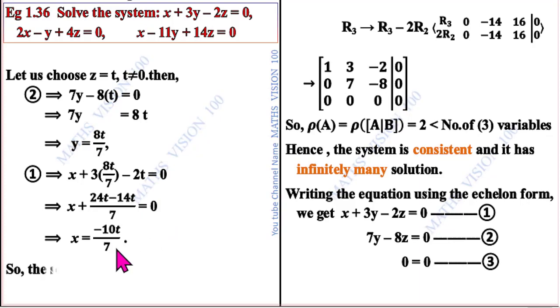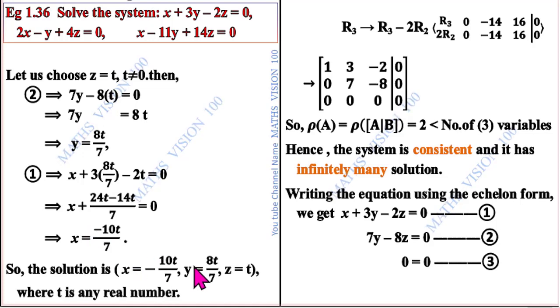So the solution is x equals minus 10t divided by 7, y equals 8t divided by 7, z equals t, where t is any real number.